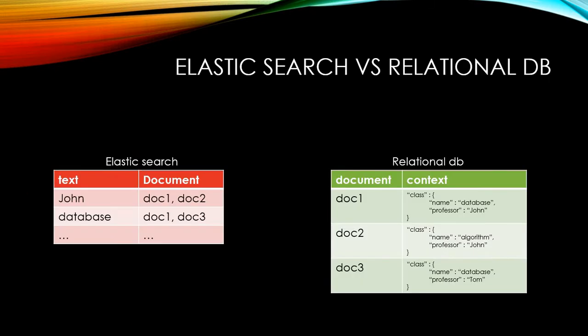Let's compare this logic to a relational database. If it were a relational database, it would look like the right-hand side table. Now suppose you are Google search and your user searches for 'John' in Elasticsearch — you can easily return doc1 and doc2 to the results page, while with a relational database you would iterate through from doc1 to doc3.